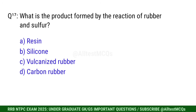Q17. What is the product formed by the reaction of rubber and sulfur? Correct option is C. Vulcanized rubber.